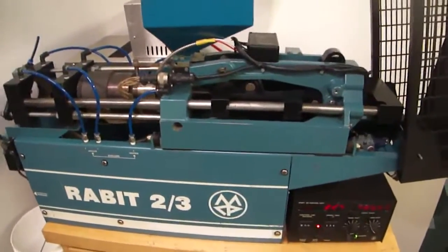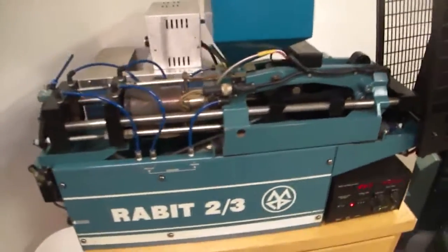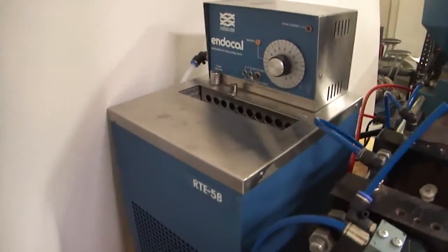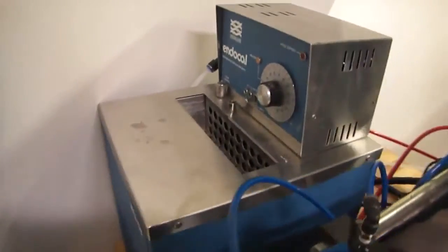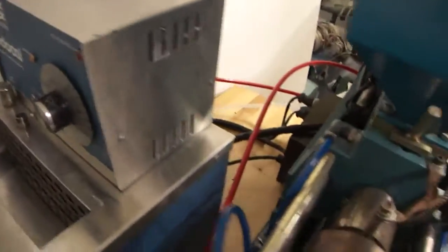This is a fully automatic injection molding machine, 100% fully functional. It also includes the Endocal RTE 5B mold chiller that will cool the water or glycerin mix and then funnel it through the machine up into these blue lines right here to keep your molds cool.